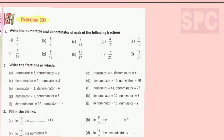After understanding the concept of numerator and denominator, let's move ahead and start solving the questions of exercise 30. Question number 1: Write the numerator and denominator of each of the following fractions. Now children, here you can see there are total 10 parts in this question and we have to write the numerator and denominator of each of the fractions which are given. This is very simple. You can see there is a line separating the numerator and the denominator.